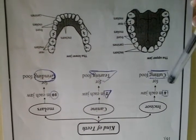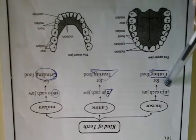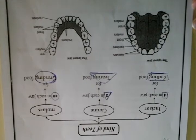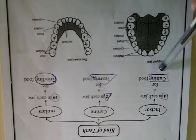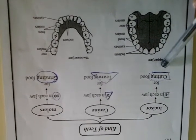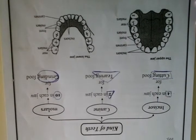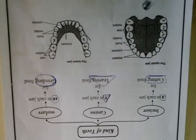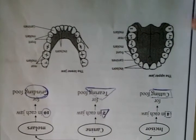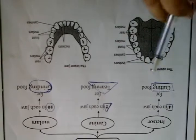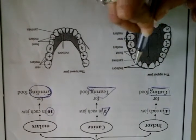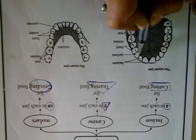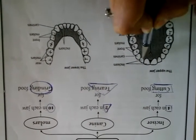Incisors — four in each jaw. The function of incisors is cutting. Let's see on the diagram. Incisors in the upper jaw: here and here. There are two and another two. How many incisors? Four.